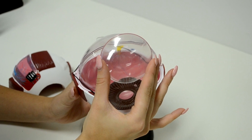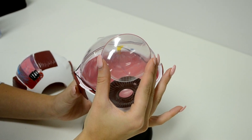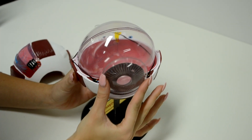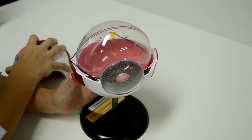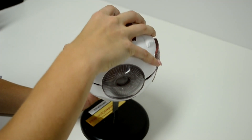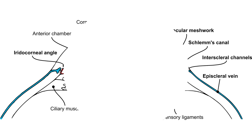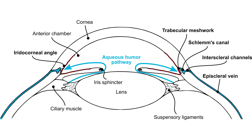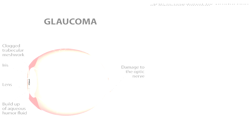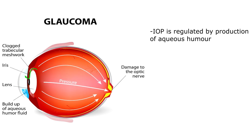Corneal thickness is important to note during ophthalmic investigations as it may influence other clinical findings, most commonly a patient's intraocular pressure, or commonly known as IOP. IOP is the pressure of the eye that keeps it adequately inflated. This is regulated by the production and secretion of a fluid known as aqueous humor. IOP is important because if it is too high or too low, it can eventually lead to eye diseases which can severely degrade vision if it is not managed.